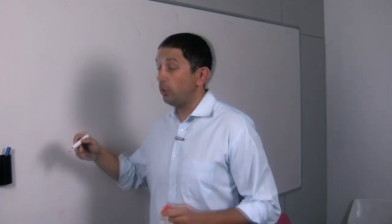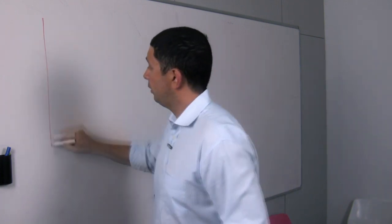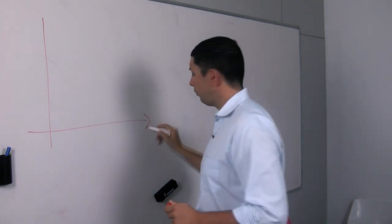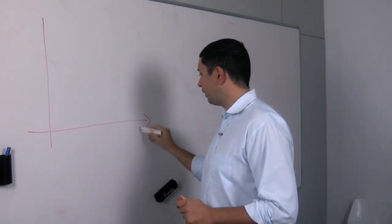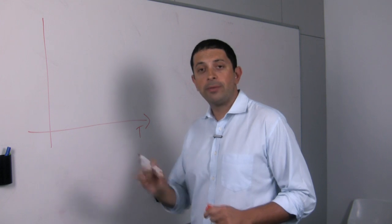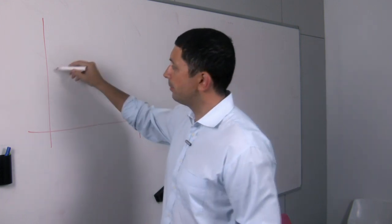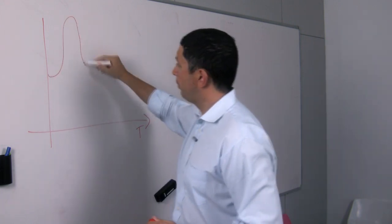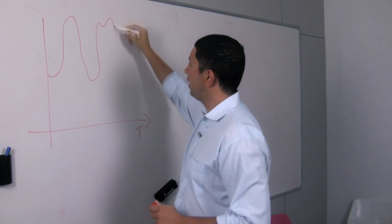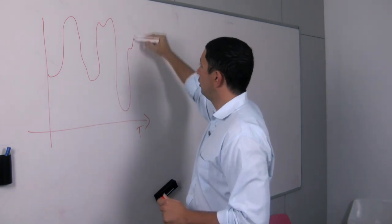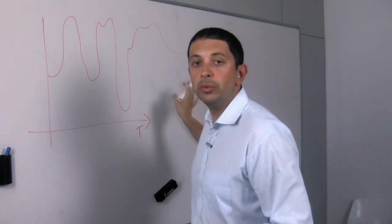So imagine that at your location, this graph here, with this line being the time, you have the demand moving like this: up, down, a little bit up, steady, down more, and moving along the time.